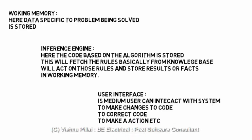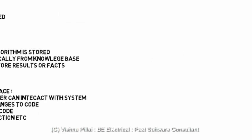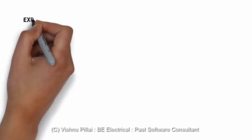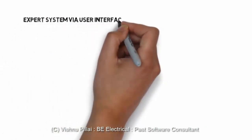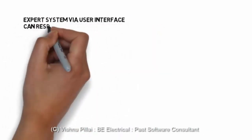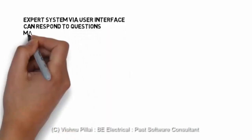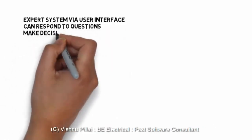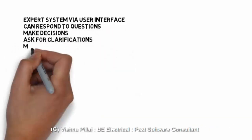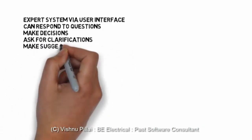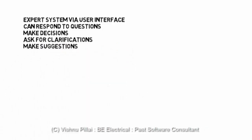The user interface is a medium through which the user can interact with the system — to make changes to the code, add corrections, and view results. The interface can respond to questions, make decisions, ask for clarifications, and make suggestions.